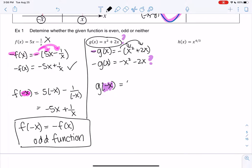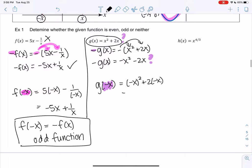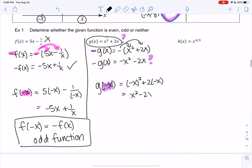And essentially we're wondering, does it match this one or this one or neither? So we'll plug in negative x. So we get (-x)^2 plus 2 times negative x. So negative x squared becomes x squared minus 2x. And that looks like it matches neither of these. So it doesn't match the original, but it also doesn't match the negative. So this would be neither even or odd.